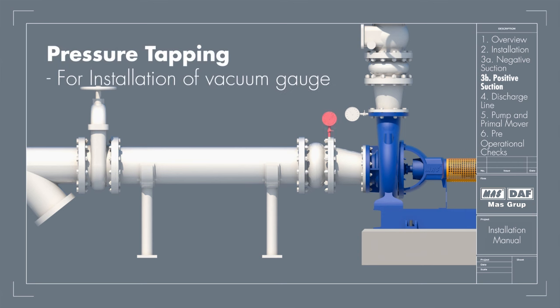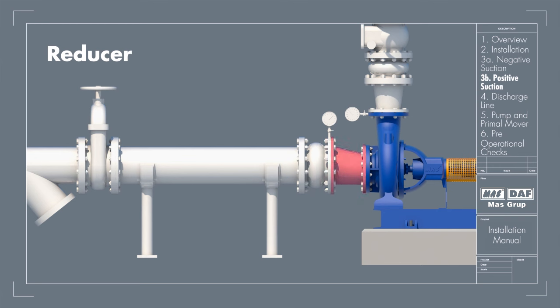There should be a pressure tapping provided for installing a vacuum gauge in the suction line. The reducer joining the straight length of the pipe in the pump line should be an eccentric reducer with the incline, the side of the reducer, as the top side.